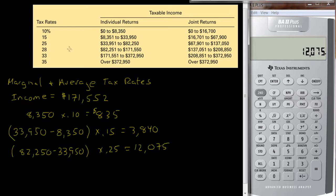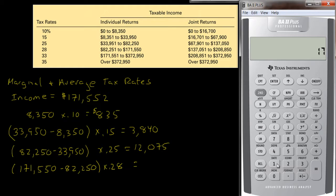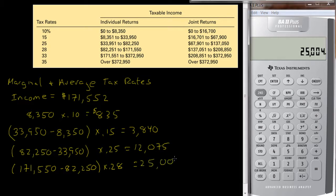And then the income they have, let's see, the next amount of income, the $171,550 minus $82,250 will be taxed at a 28% rate. So let's see what that is, $171,550 minus $82,250, and then times .28, so this is going to be taxed at $25,004.